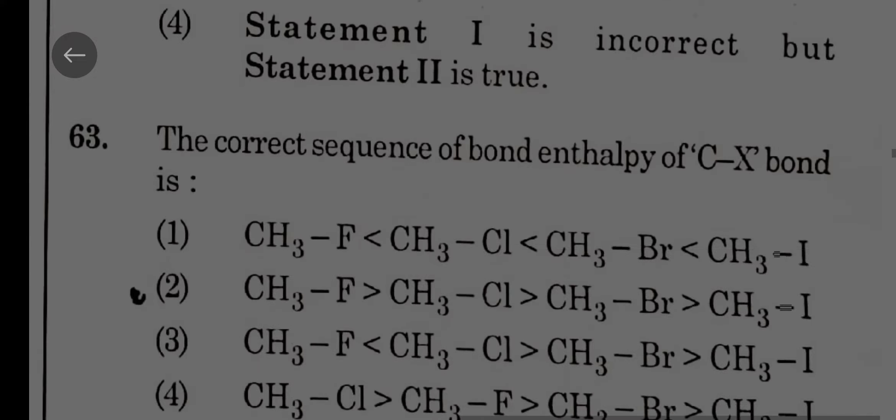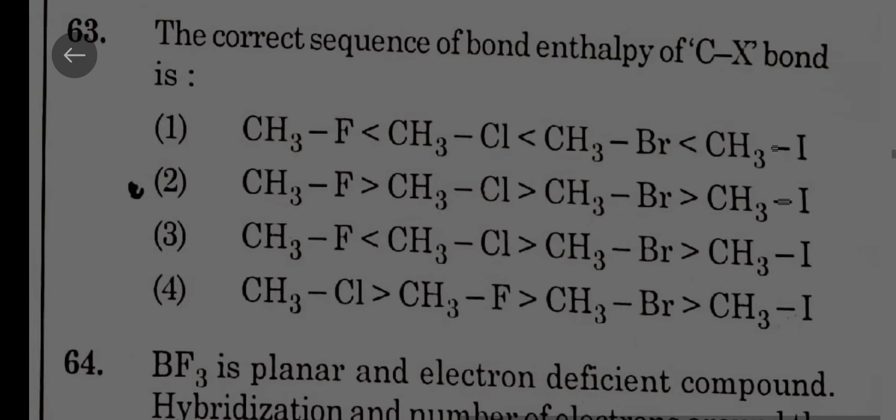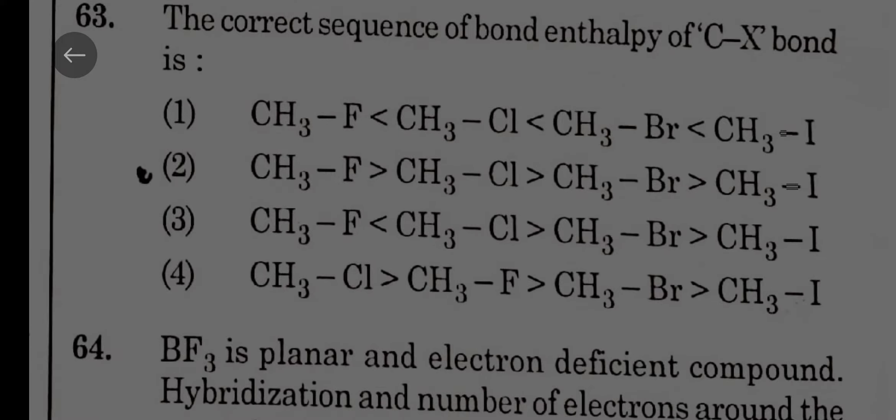The correct sequence of bond enthalpy of C-X bond: carbon-fluorine bond is stronger than carbon-chlorine, carbon-bromine, carbon-iodine. So second option.